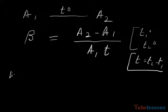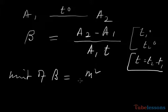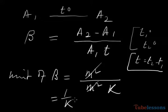Now, what is the unit of beta, the coefficient of superficial expansion? A2 minus A1 is the increment of area with unit meter squared in SI system. A1 is also meter squared. T is in Kelvin.